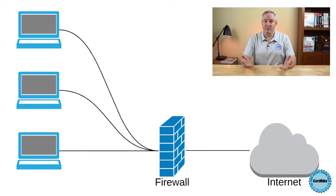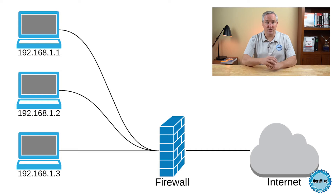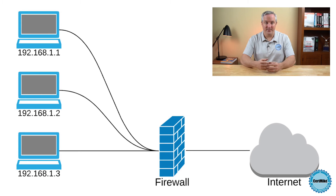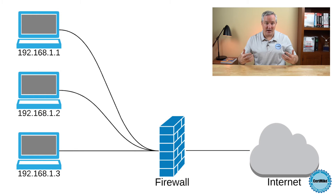Today, organizations typically use a balance of public and private IP addresses. They use private addresses broadly within their private networks, assigning them to all of their internal systems, and then use a small number of public IP addresses for systems that require public access. For example, administrators might assign private addresses from the 192.168 range. However, systems with private IP addresses cannot communicate on the internet using those addresses because they aren't routable. Thousands of organizations use those same addresses on their internal networks, so remote systems would have no way of knowing where reply traffic should go.